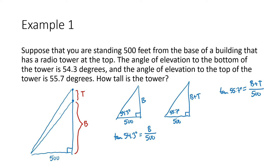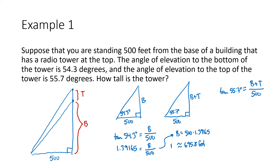On the calculator in degree mode, tangent of 54.3 degrees gives 1.39165. Keep many decimal places since we're multiplying by 500 and we don't want to round too soon. Multiplying both sides by 500, B equals 500 times 1.39165, which gives approximately 695.8 feet. That's the height of the building, which lets us find the height of the tower.